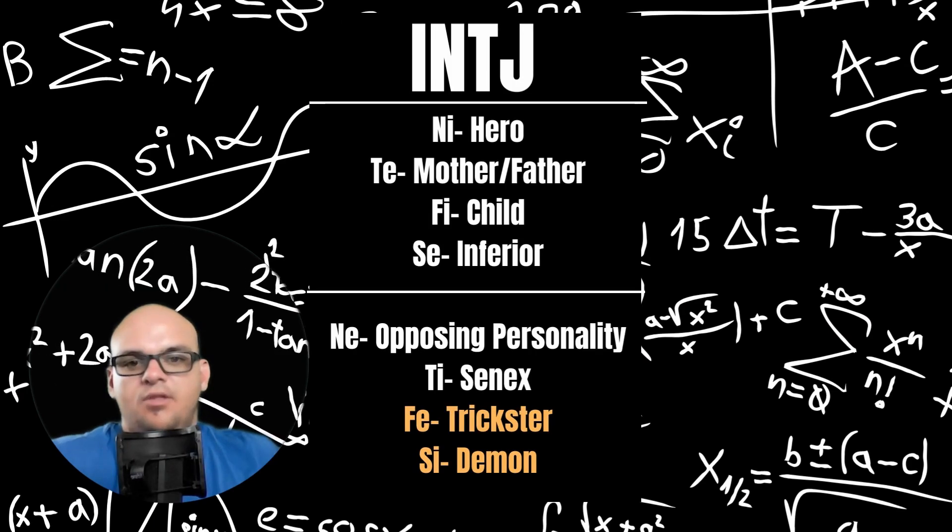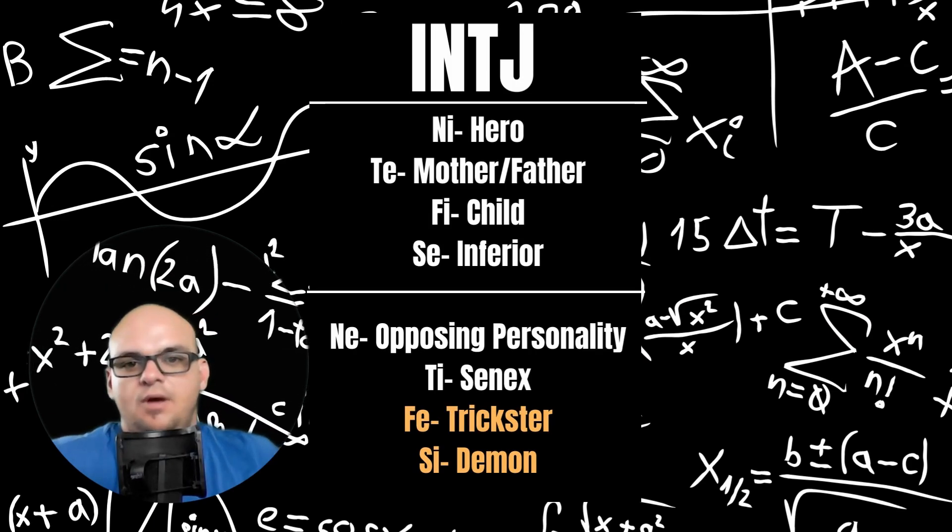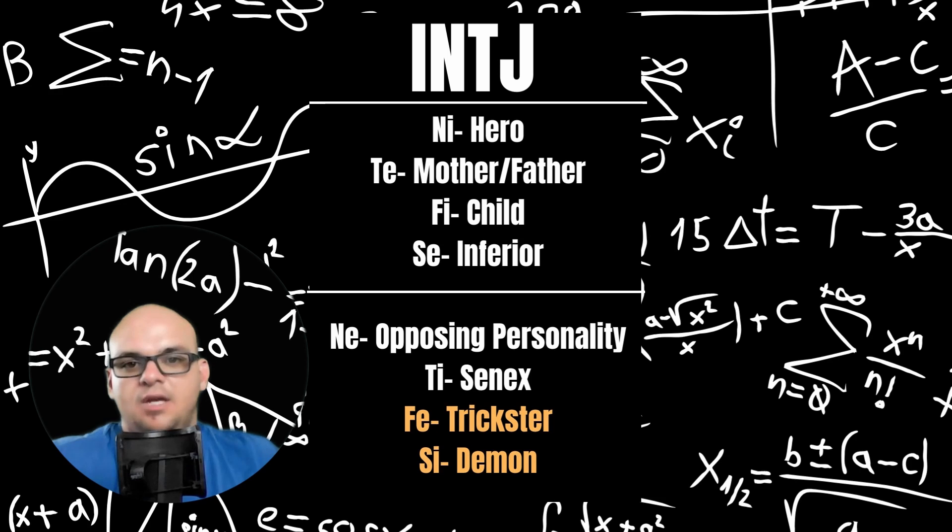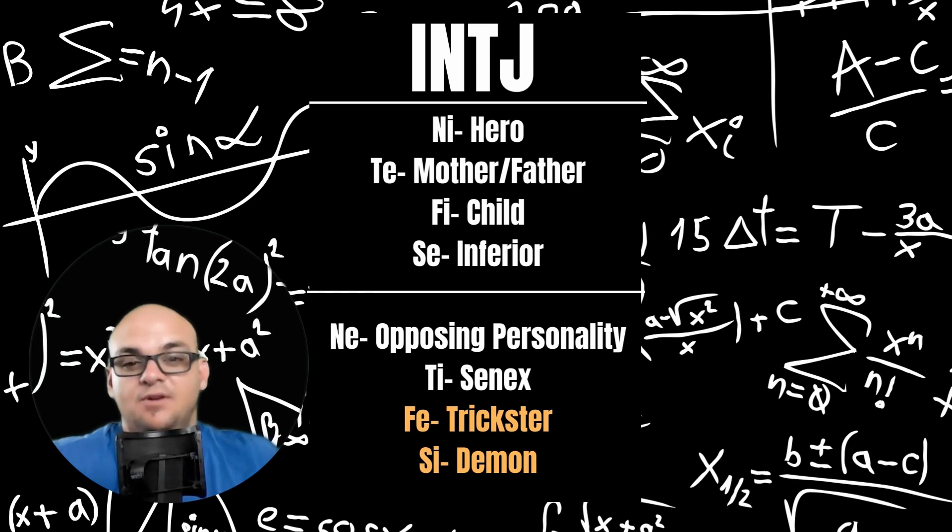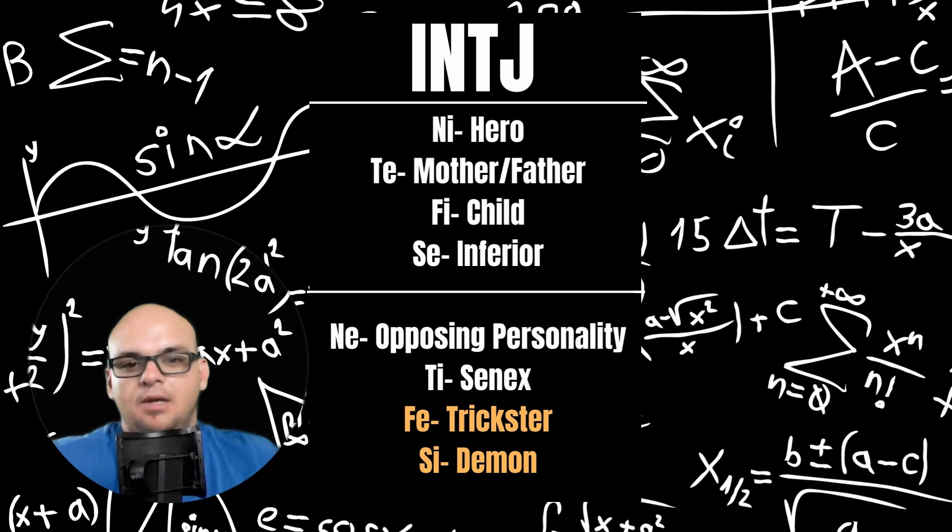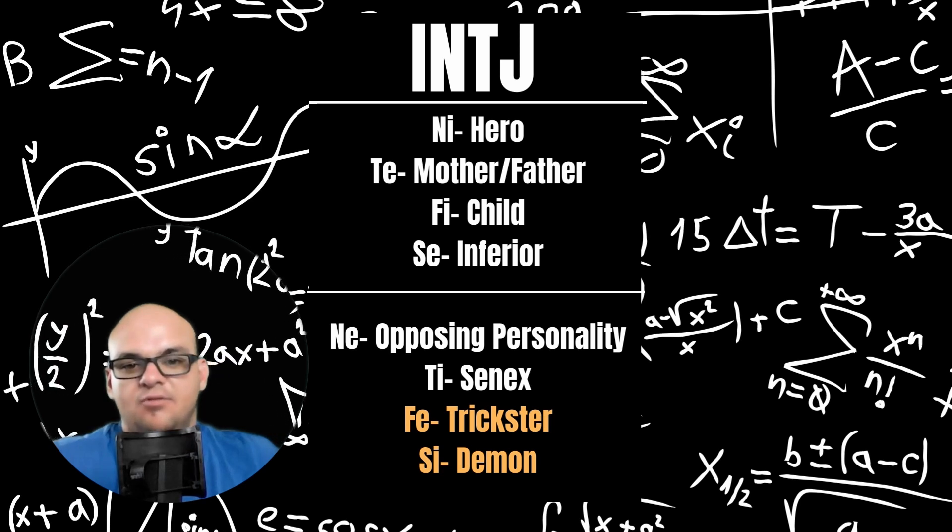Being an INTJ on its own can make socializing pretty difficult. You see, INTJs have FE Trickster and SI Demon. These are the lesser-known cognitive functions from John Beebe's 8-Function model. I'll put a link in a playlist and talk about the cognitive functions down in the description below and at the end of this video, so be sure to check that out.